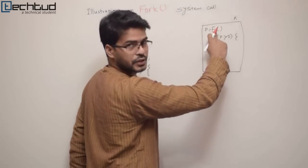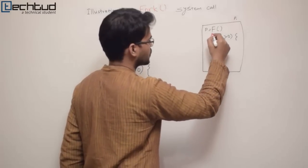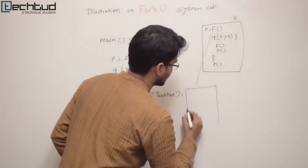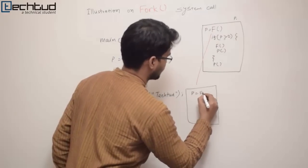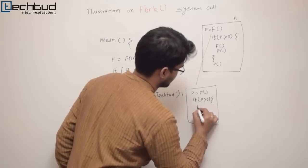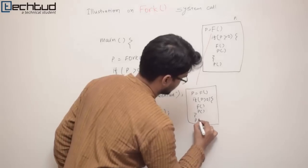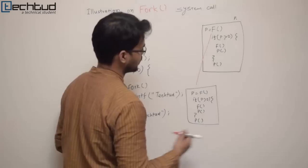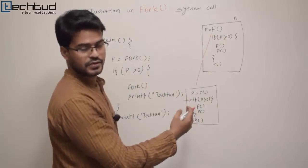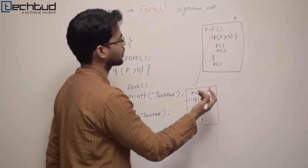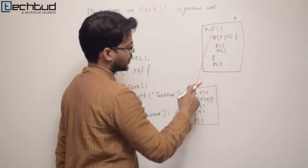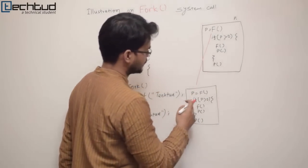Now let's start executing and see how it works. First, this fork is executed — as we know, this will create a child process. This child will be a copy of the parent, but it will start executing from the next line. So both parent and child process start execution from the next instruction. Here this is the fork, and fork returns something which is assigned to p.